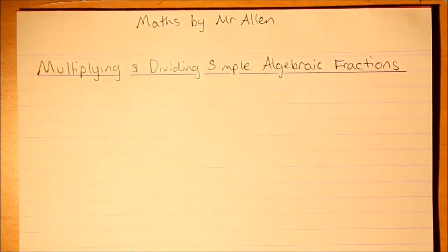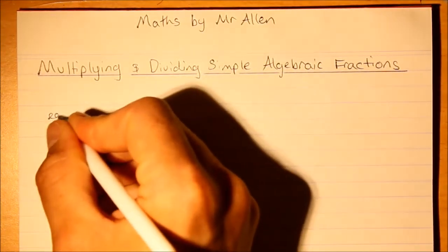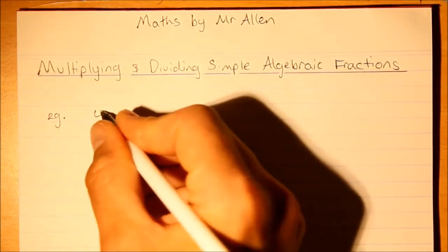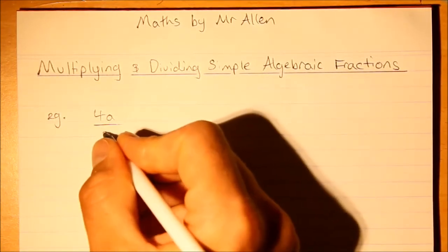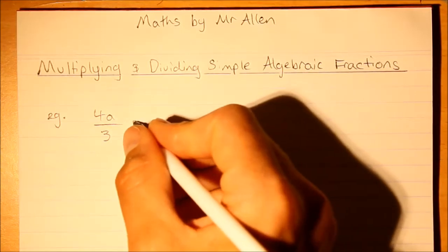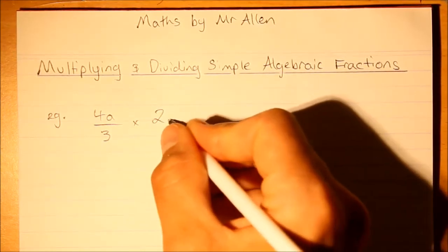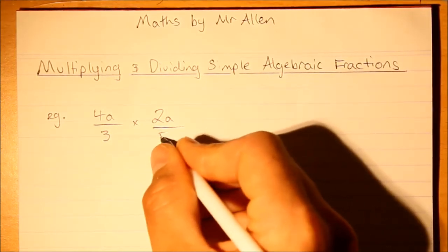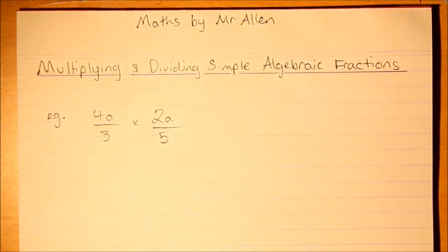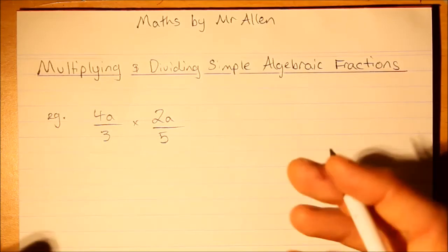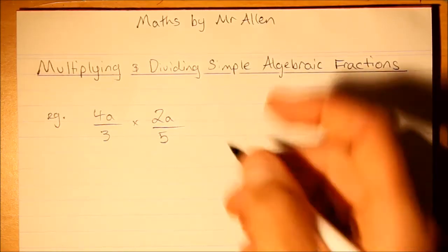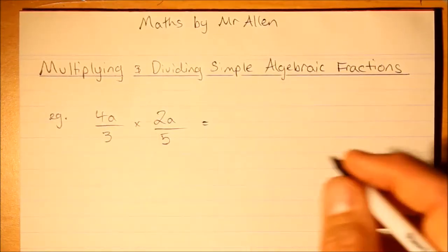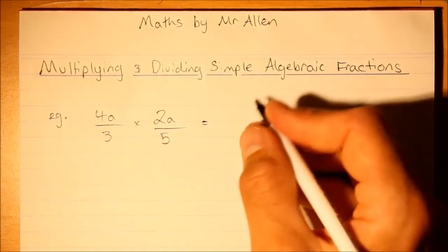Let's have a look at multiplying and dividing simple algebraic fractions. An algebraic fraction is a fraction that contains pronumerals, and here we're trying to multiply them. If you think back to the rules on multiplication of fractions, it's really quite easy. All you have to do is multiply the tops together and multiply the bottoms together.